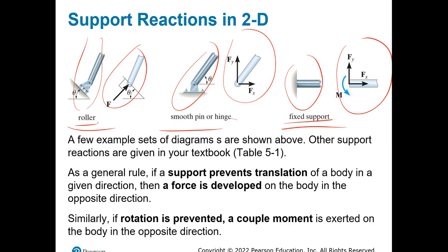For the fixed support, you have the wall. Once you remove the wall to draw your free body diagram, you have to think about what the wall is doing to the element. When something is fixed to the wall, it's not able to rotate or translate. So you have to add the reactions and the moment that the wall is exerting on your element.